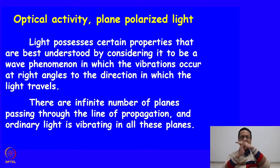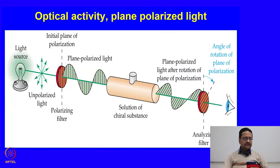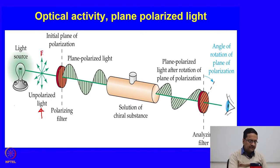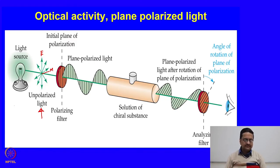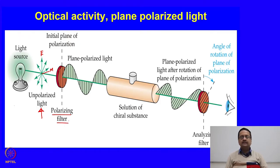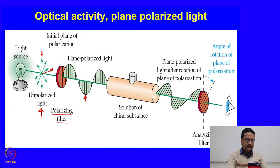Each of these possible orientations are orientations of the electric and magnetic vibrations. When we have a source of light, we have a straight light where the electric vectors and the magnetic vectors are vibrating in perpendicular directions and those vibrations are possible in all possible directions. When we pass this light through a polarizing filter, it only allows one part of the light — the electric vector — to pass through, and this gets polarized in one particular plane. This is called the plane polarized light.